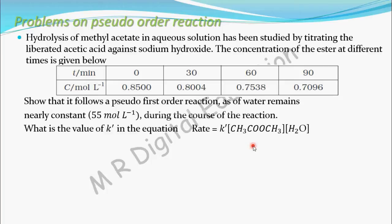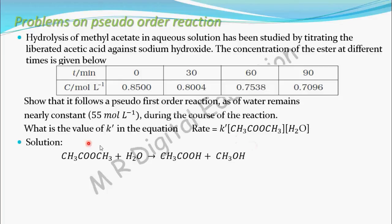The problem states that hydrolysis of methyl acetate in aqueous solution — methyl acetate is CH₃COOCH₃. Hydrolysis means adding water to this methyl acetate. Upon hydrolysis, methyl acetate gives acetic acid and methyl alcohol. This liberated acetic acid is titrated against sodium hydroxide — that is the experiment.